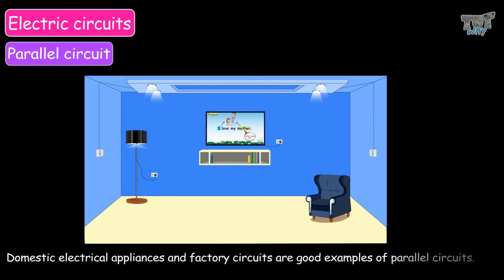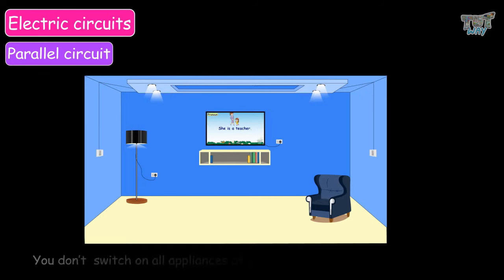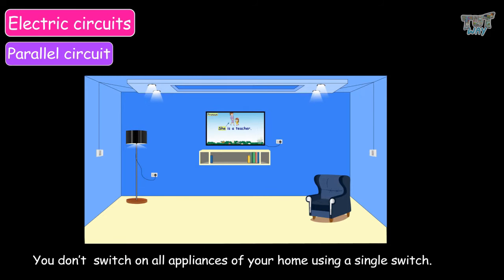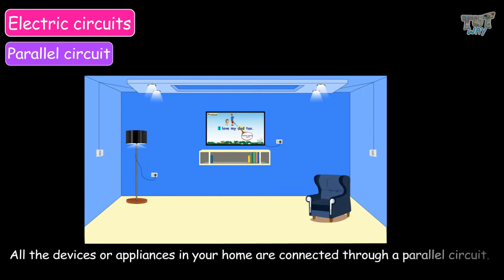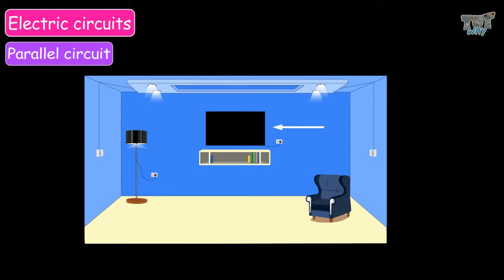Domestic electrical appliances and factory circuits are good examples of parallel circuits. You don't switch on all the appliances of your home using a single switch. All the appliances in your home are connected through a parallel circuit. If one device or appliance burns out, it does not affect the other appliances.